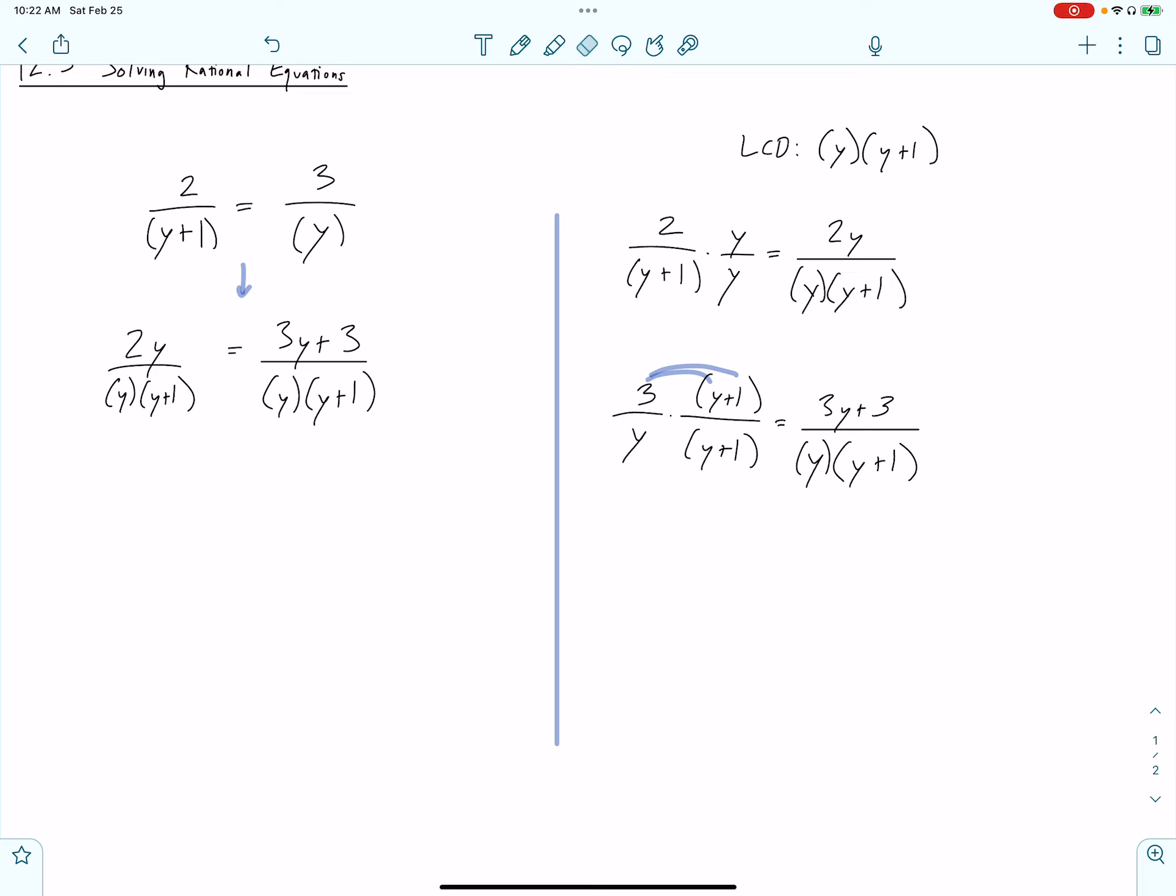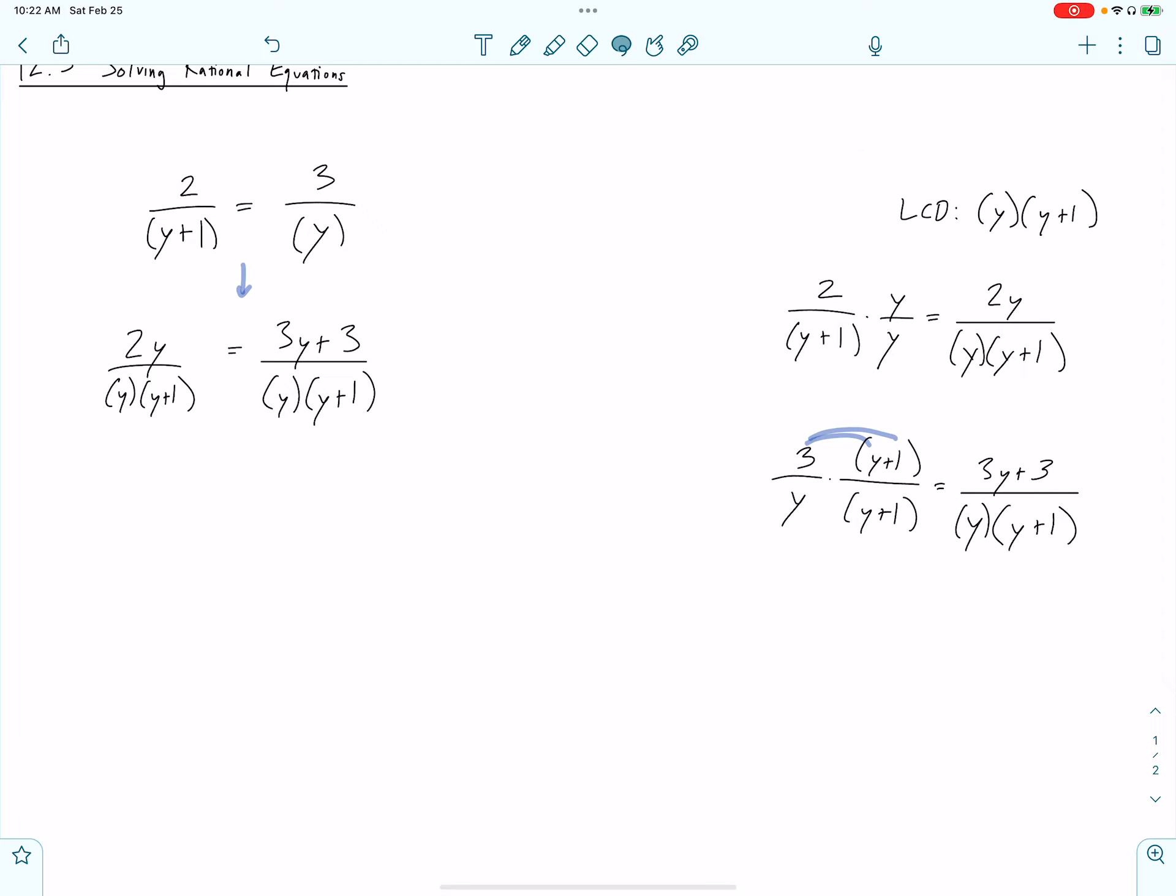The reason is we would like to get y equals something. Right now, there are y's all throughout this equation in the numerators and the denominators all over. The purpose of this is I'd like to start by clearing my denominators. And now that they are both the same as each other, I can do this very nice move.